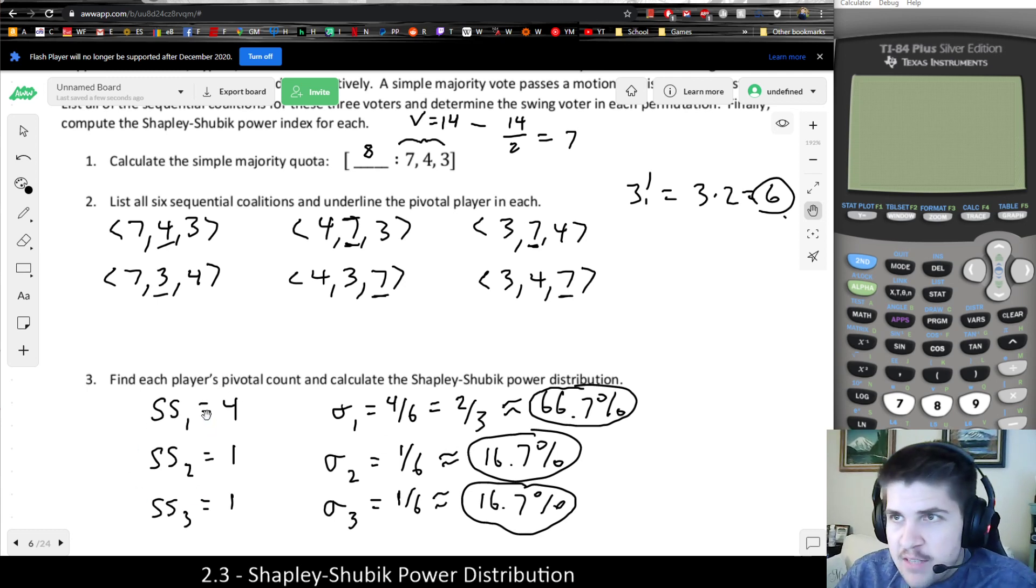But also, what you can do is check to make sure that the sum of all of your Shapley-Shubik pivotal counts is equal to n factorial, and just make sure that you're only doing 1 in each case. But that will, that's another example of the Shapley-Shubik power distribution.